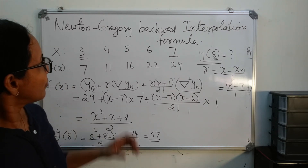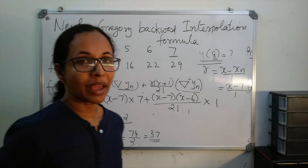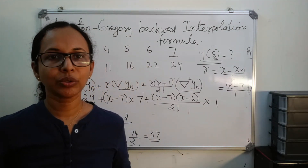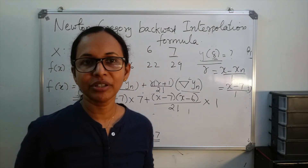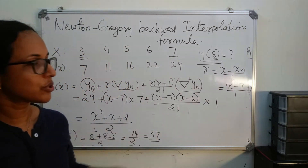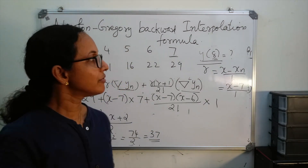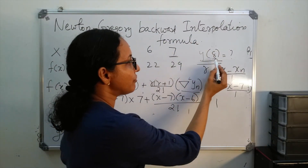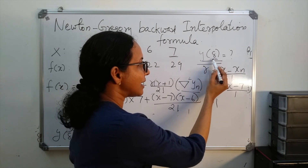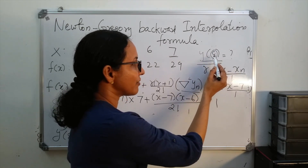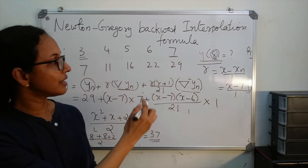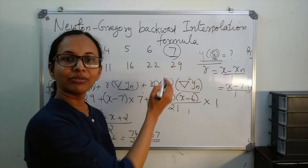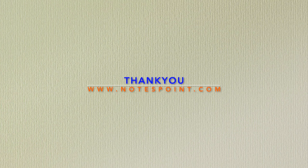When applying the Newton-Gregory backward formula, verify two conditions: first, x values must be equally spaced; second, use the backward interpolation formula only when finding y at a desired x value that lies near to the last value xn in the table.